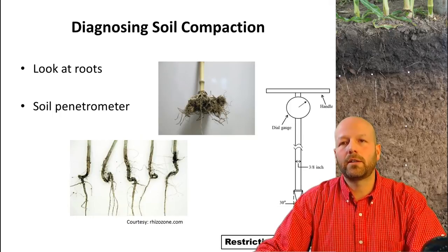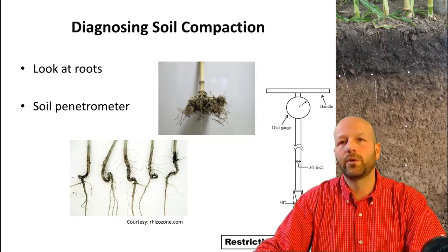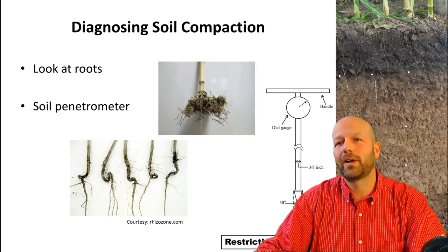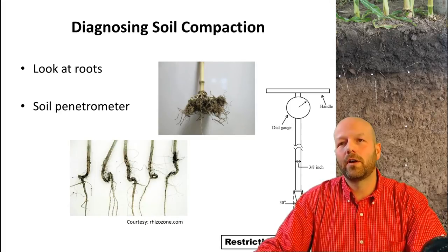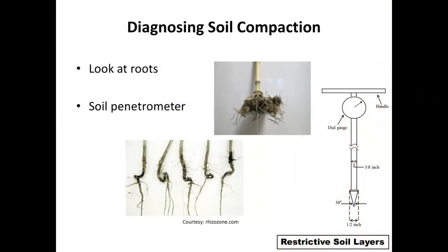Regarding diagnosing soil compaction, two of the most effective ways are looking at roots and using a penetrometer. Here's an example of a corn root showing what we call the 'pancake root system' — a technical term — which is indicative of shallow compaction where roots cannot penetrate deep into the soil profile. For tap-rooted crops such as soybean, we see what we call J-rooting, where the tap root tries to penetrate a compact layer but cannot, so it goes laterally to find an area of least resistance, resulting in a really odd-looking root system.